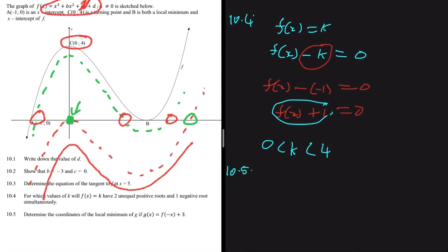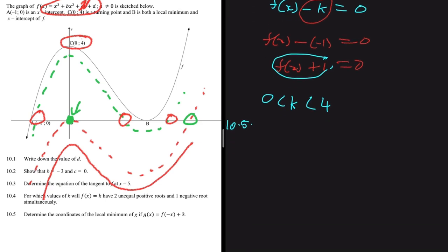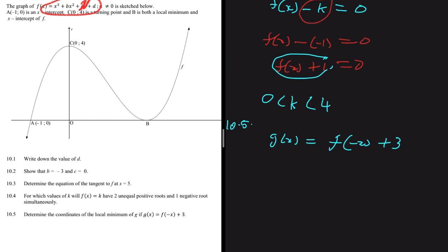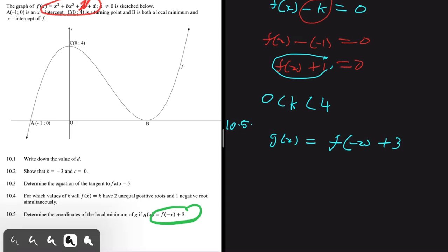Now question 10.5: determine the coordinates of the local minimum of g, where g(x) = f(-x) + 3. Since g(x) is a transformation of f(x), let's first find the local minimum of f(x) and then apply the transformation.